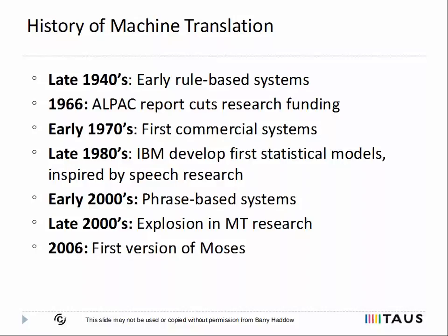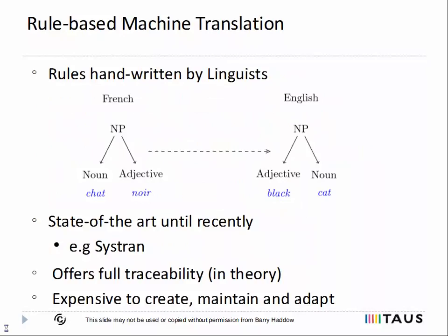However, these couldn't rival the quality of the best rule-based systems at the time. Rule-based systems continued to dominate until really the 2000s, when phrase-based machine translation was developed. And this, for the first time, was able to outperform rule-based systems in many situations. This led to an explosion in machine translation research, and a landmark in the late 2000s when Google launched their online translation system based on phrase-based machine translation. And another landmark in the late 2000s was the first version of the open-source system Moses, which was released in 2006.